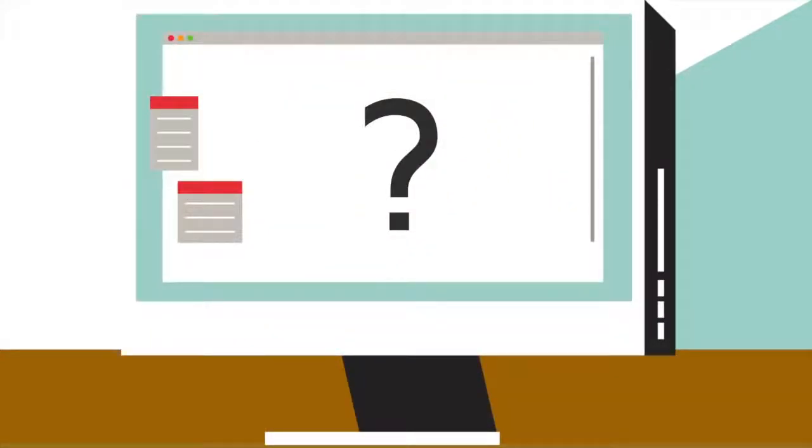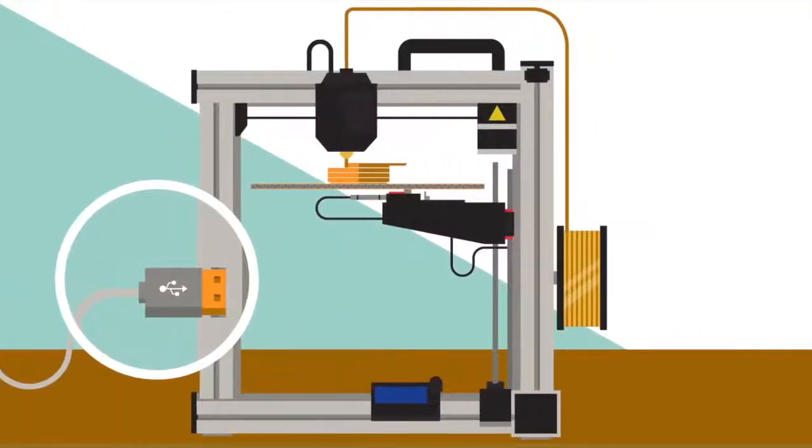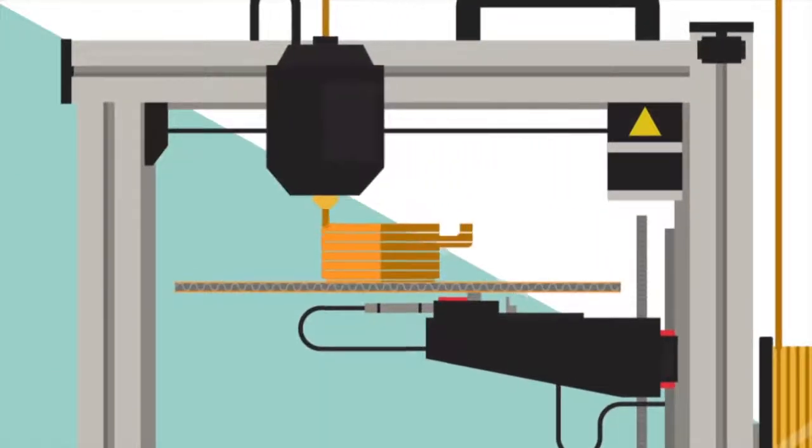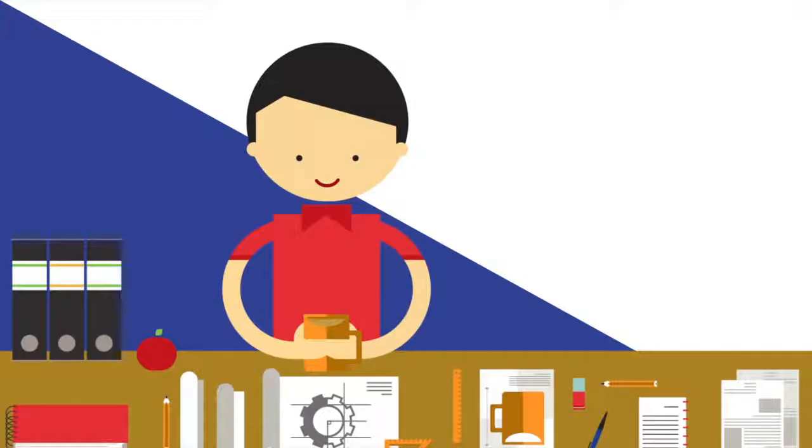How does it work? First, a design is created. The software makes printable layers. The 3D printer then melts the material and stacks the layers on top of one another. All ready to use. How about that?